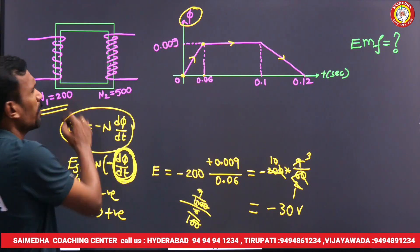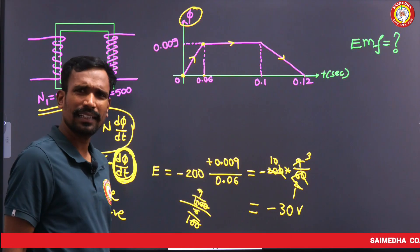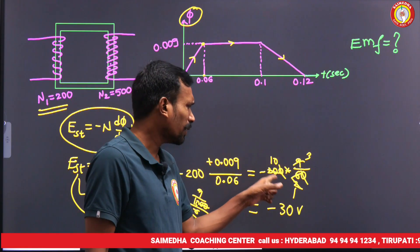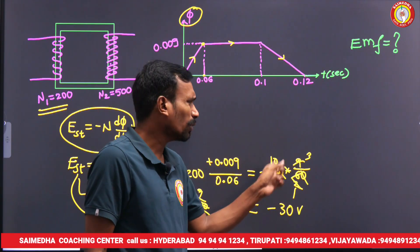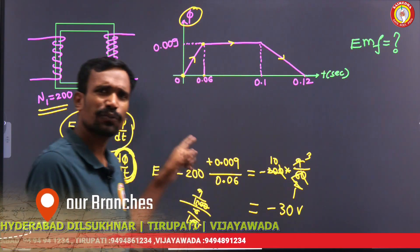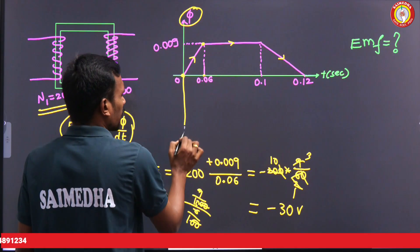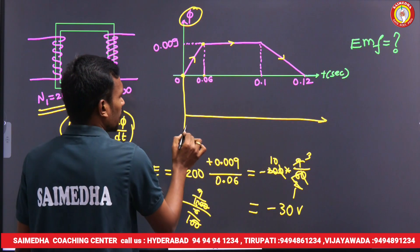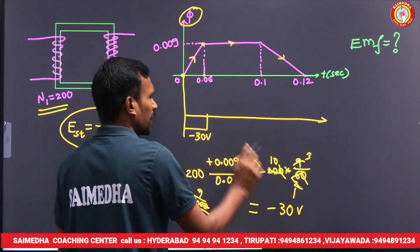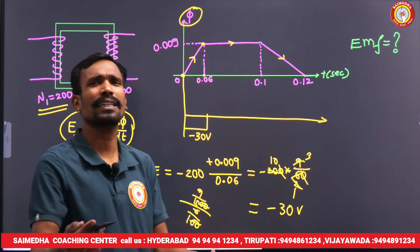If it is for the primary, it is minus 30 volts. If it is for the secondary, just take minus 500 turns instead of 200. The calculation gives minus 75 volts for the secondary.